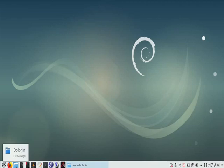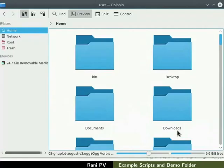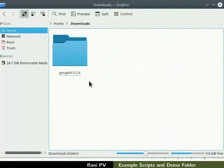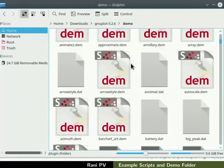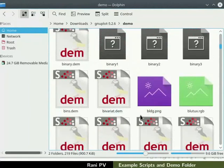Open the file manager. In my machine, this icon is located on the menu bar at the bottom. Click on the file manager icon. Navigate to downloads, gnuplot-5.2.6, and then to demo folder. Notice the various files in the folder.